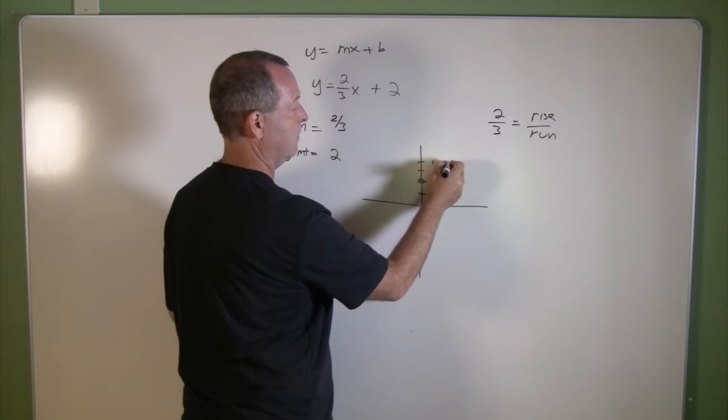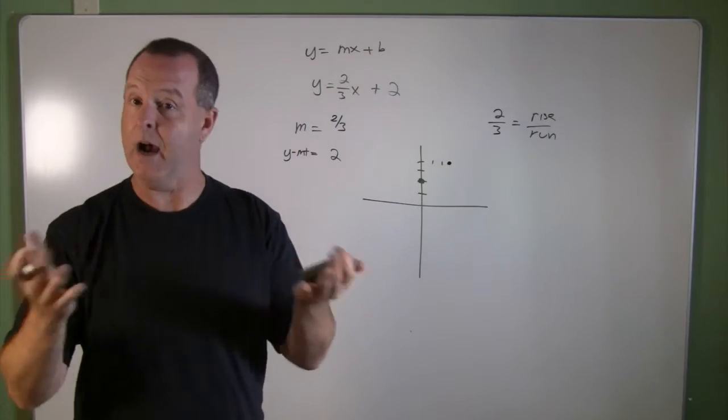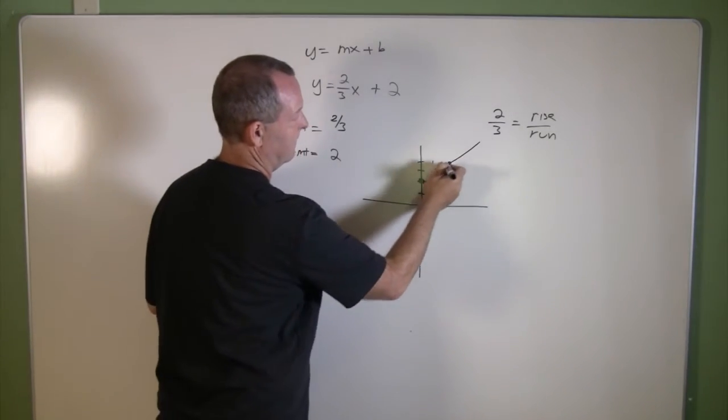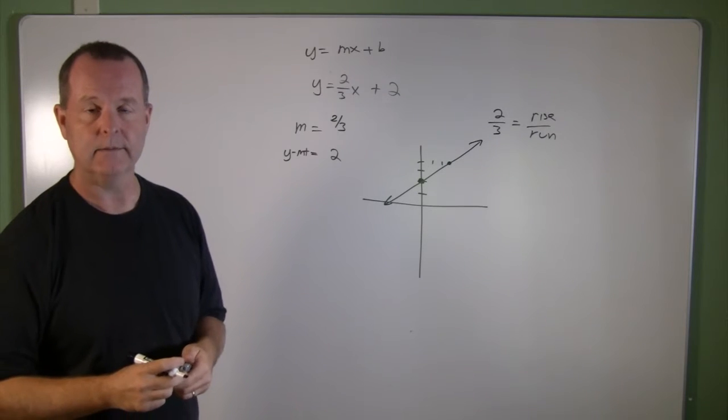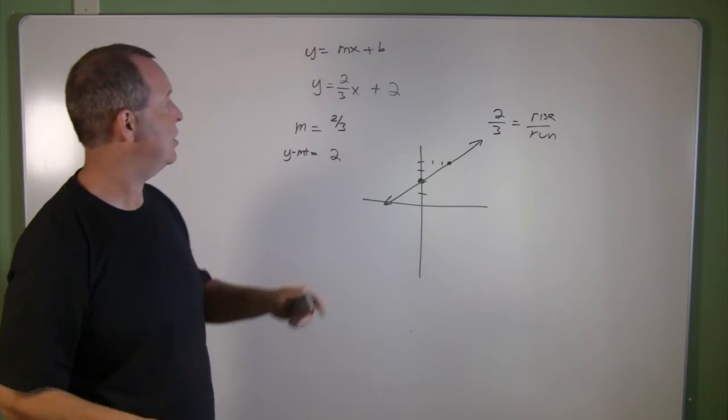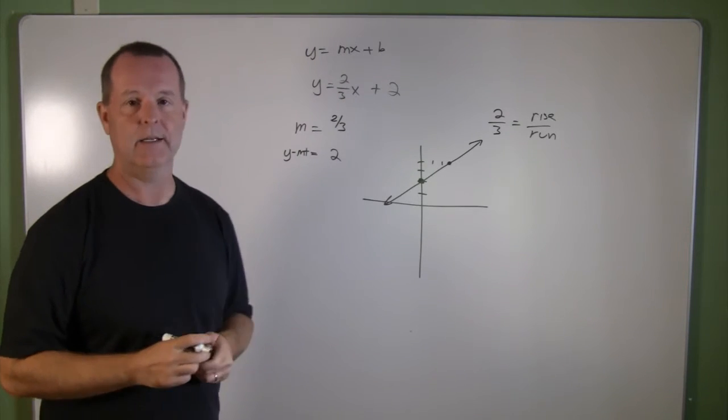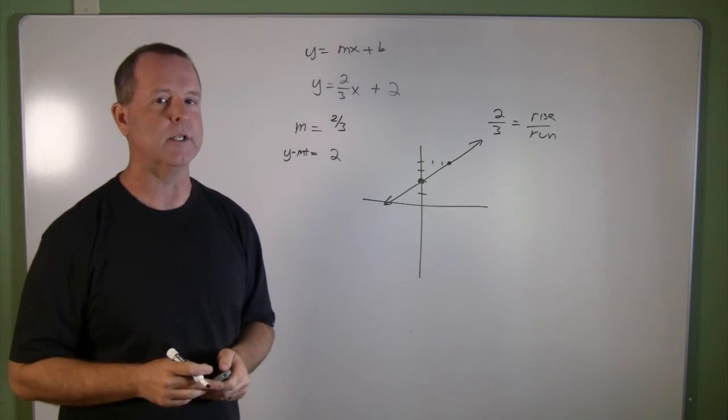One, two, three. So that tells me where the next point is at. Now I have two points, two points to determine a line, and there I have the line, the graphical representation of all the solutions that make y equal two-thirds x plus two true. And this is how we describe all those solutions.